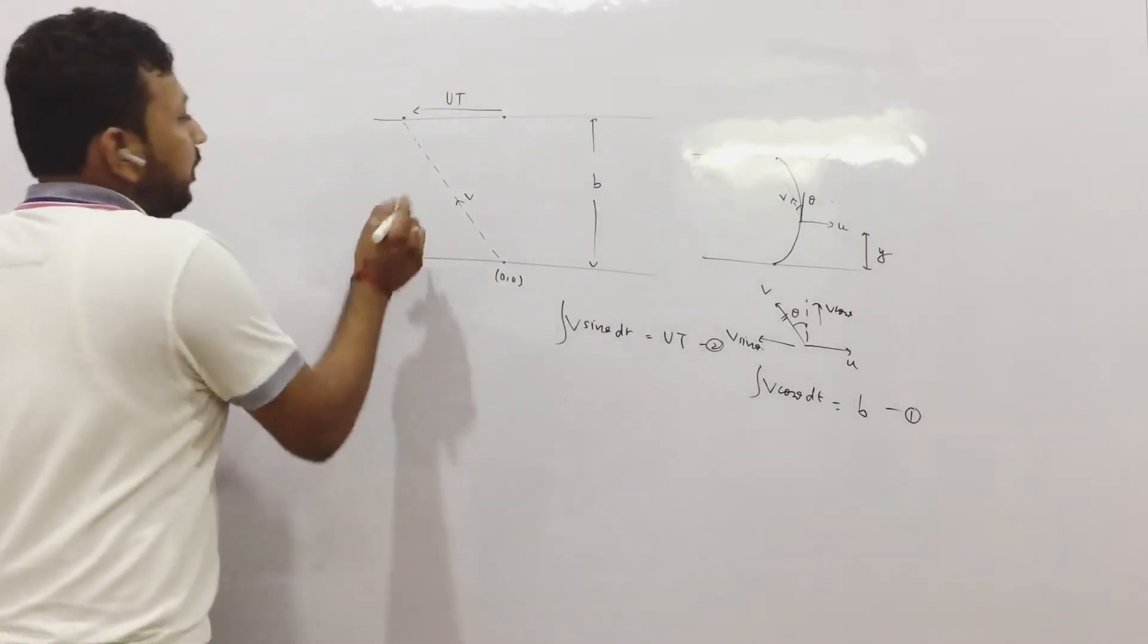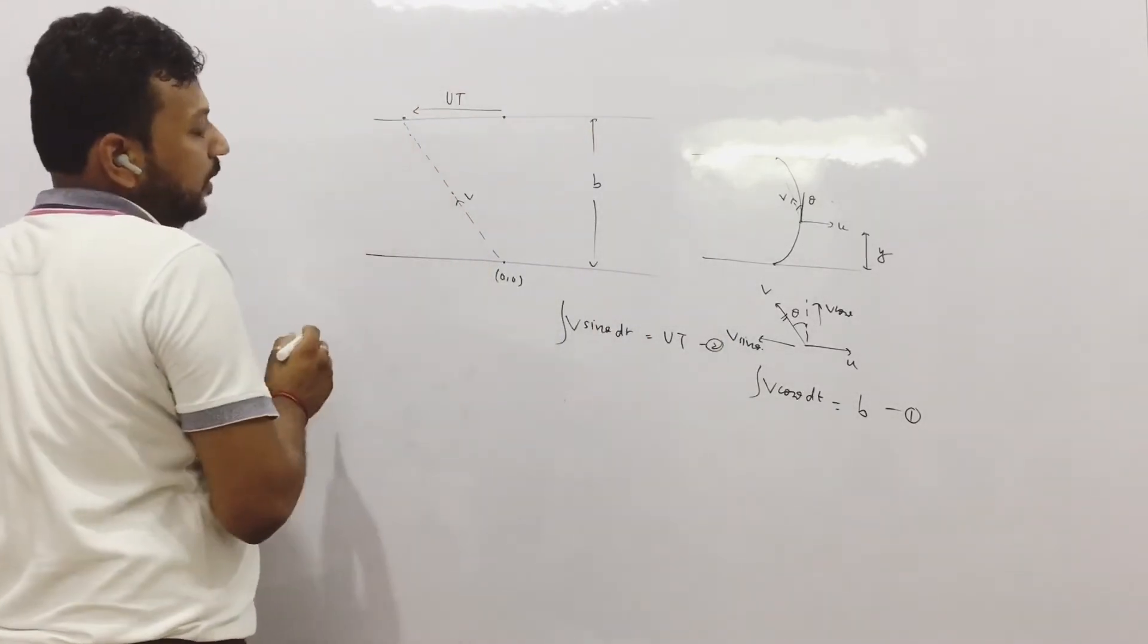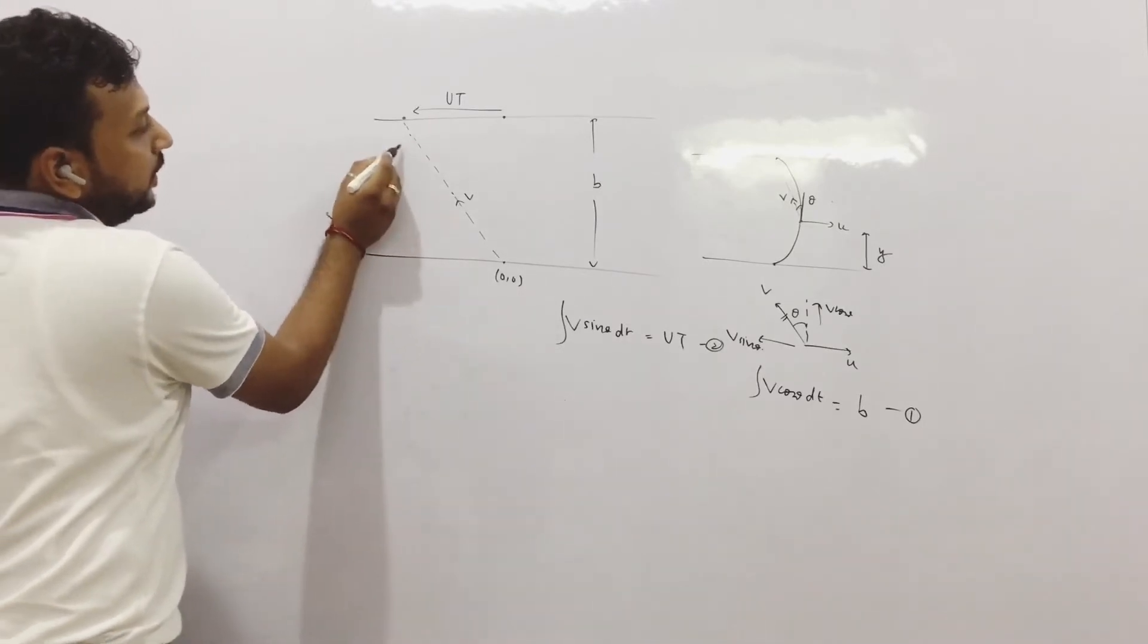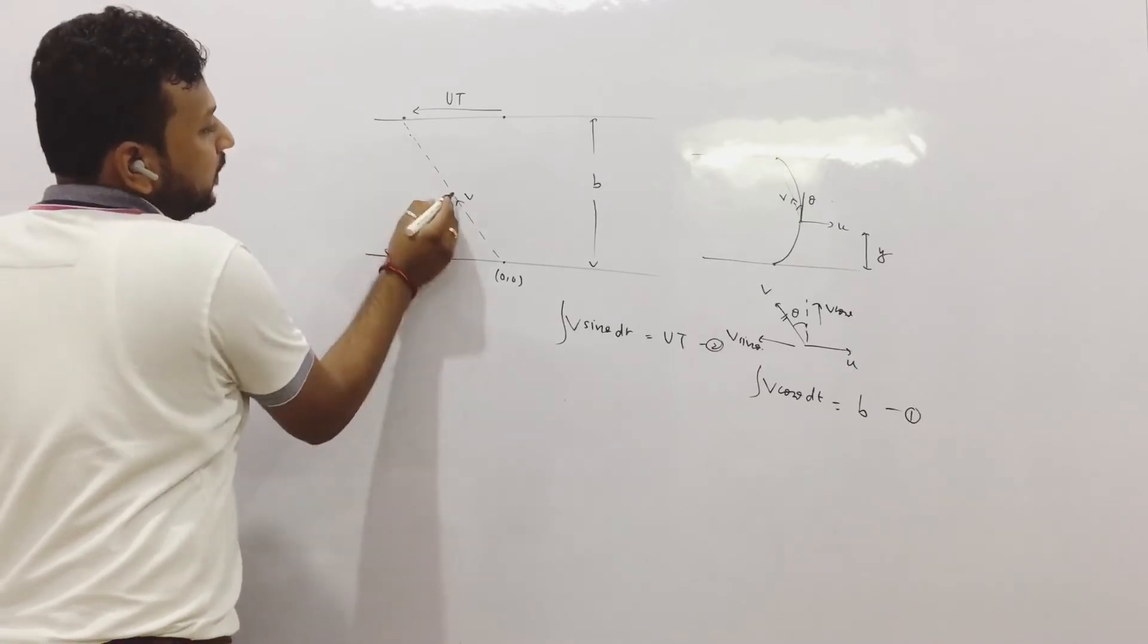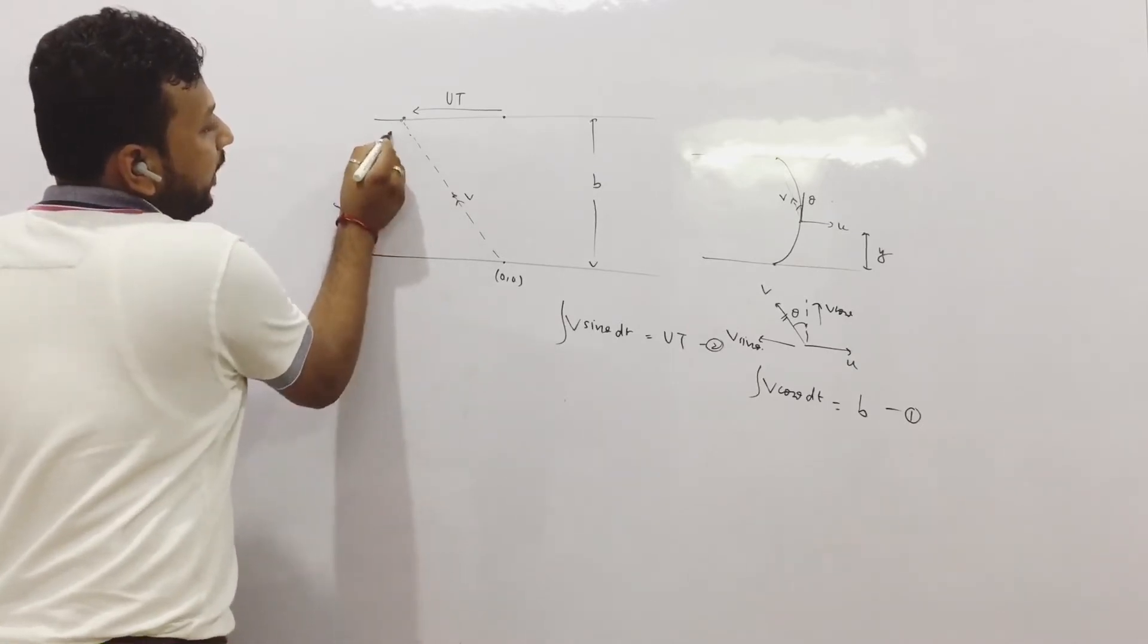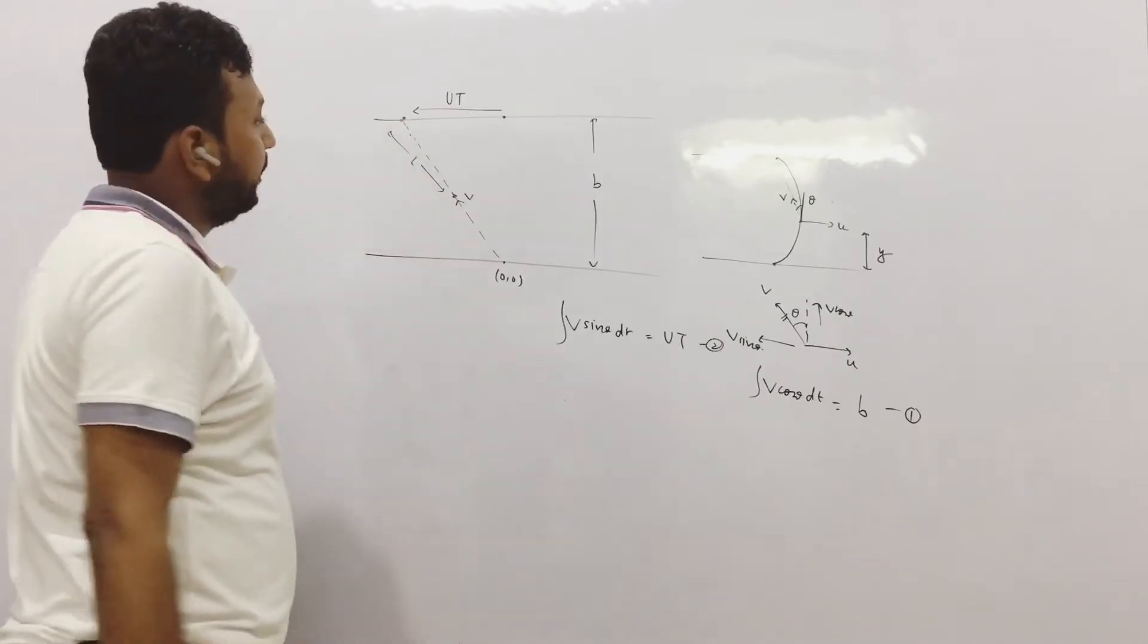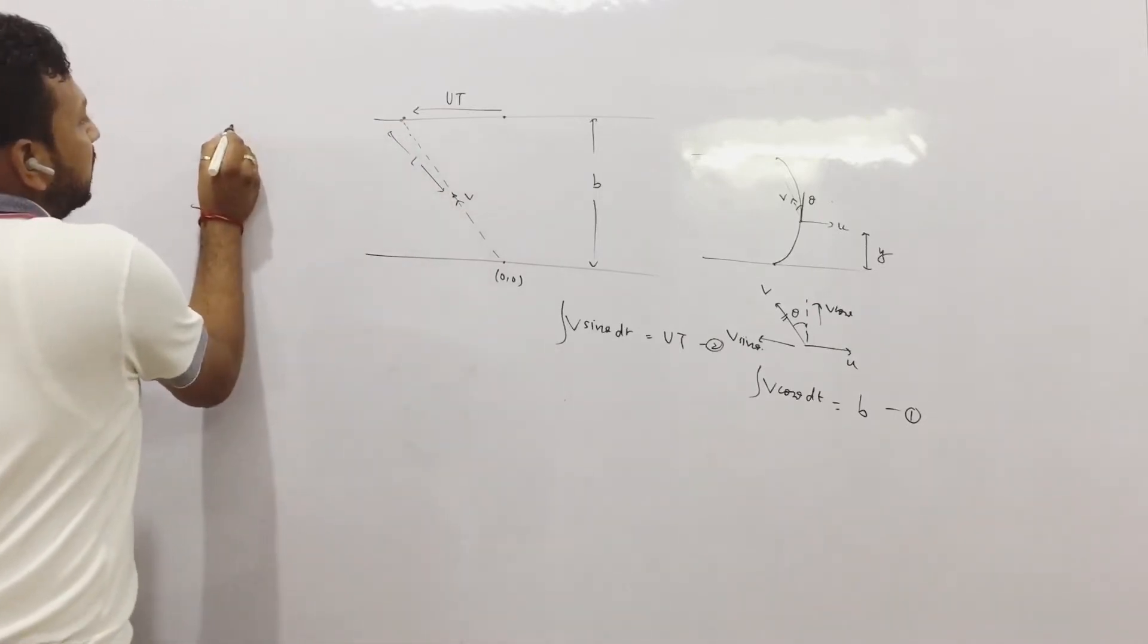Good. Now we will move on to the master equation, which is very very good. So let us understand that. Suppose this is the distance l at any instant between the boat and the final point. So let us consider this.